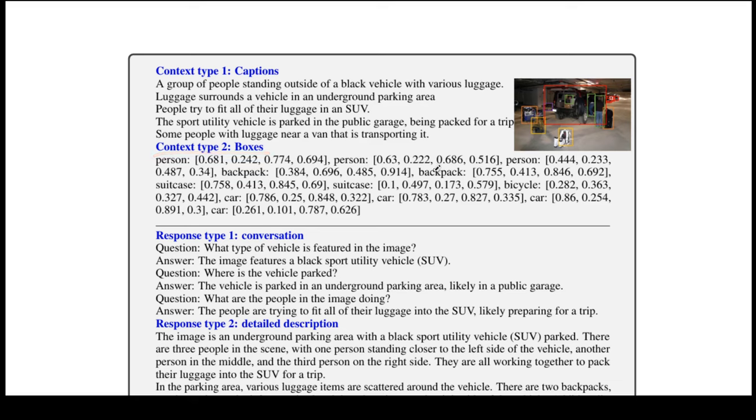So now the input to GPT is of two types. One is the caption. For example, for this image on my right, the caption is, a group of people standing outside of a black vehicle with various luggage. Or another caption could be, luggage surrounds a vehicle in an underground parking area. And for context type 2, which is boxes, it could be the person and the backpack and the suitcase all annotated with the locations.